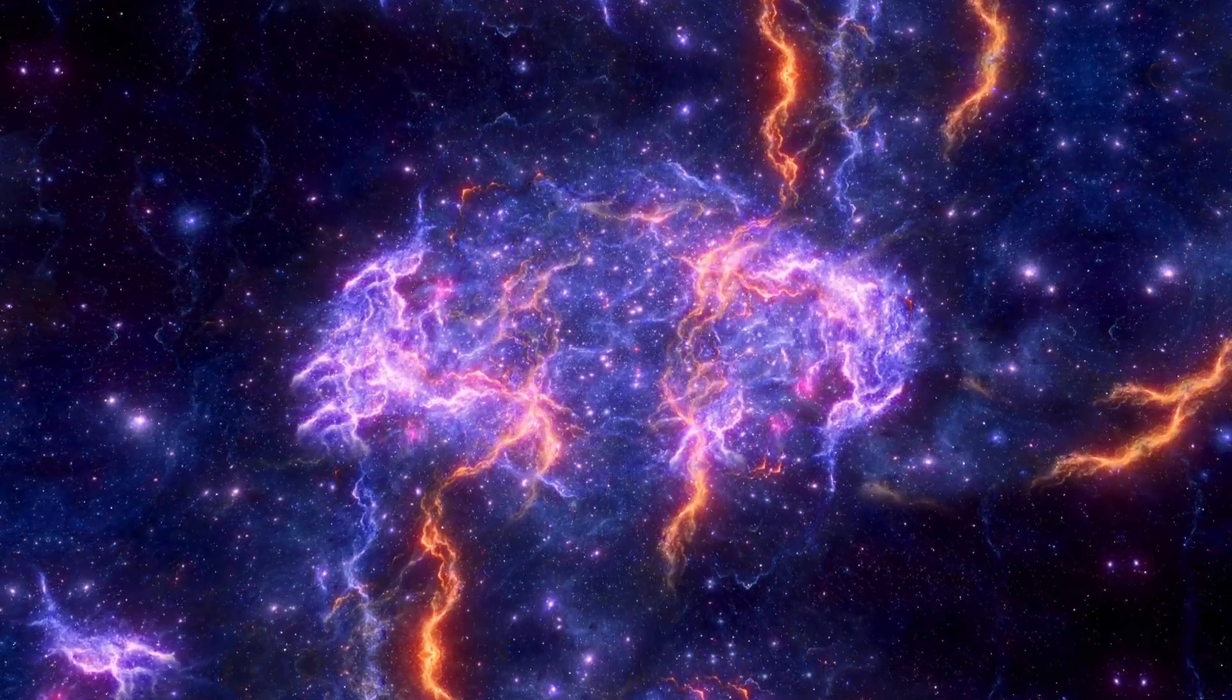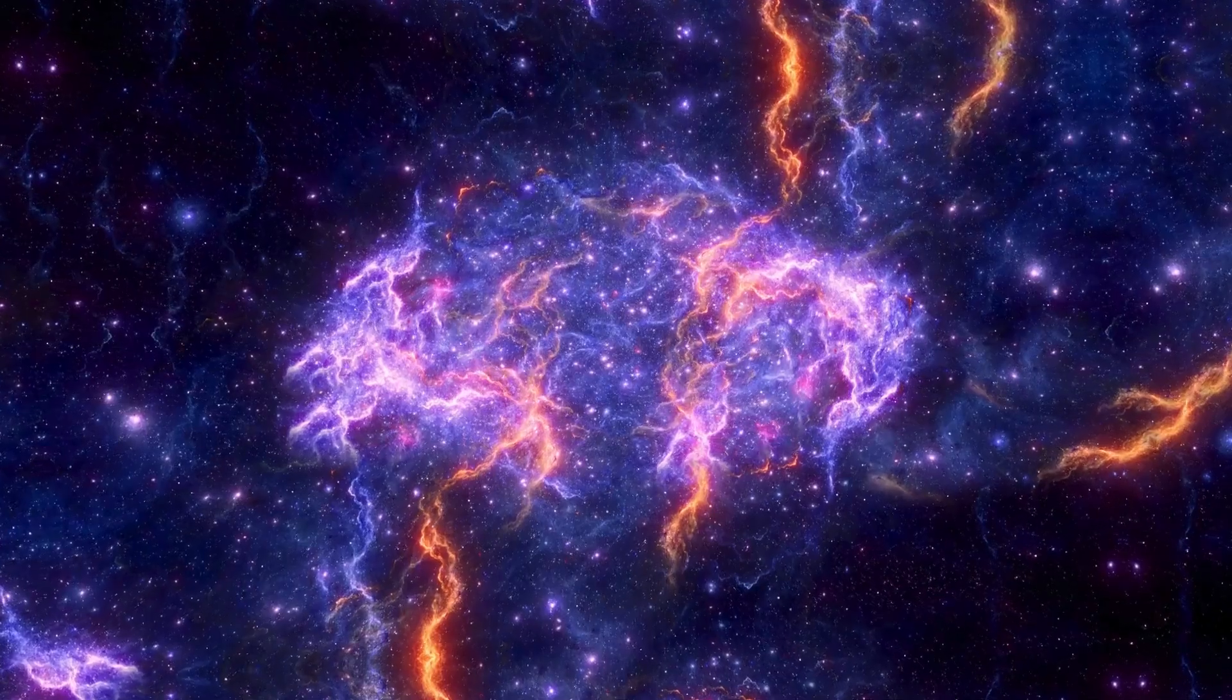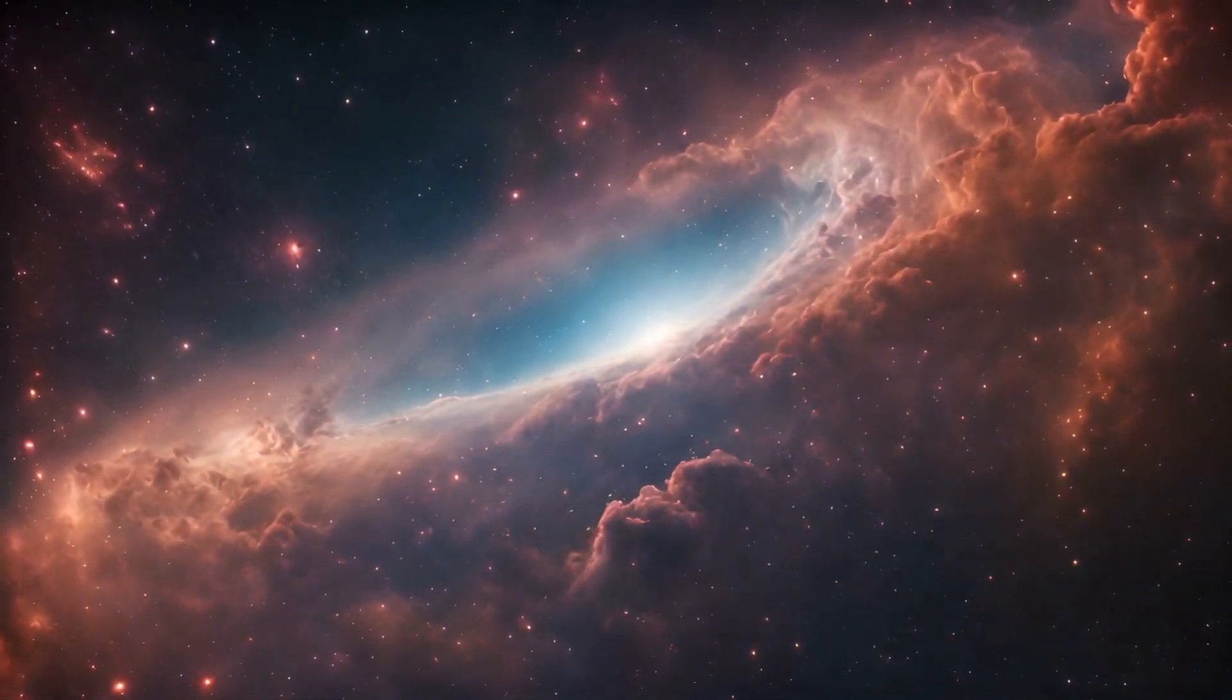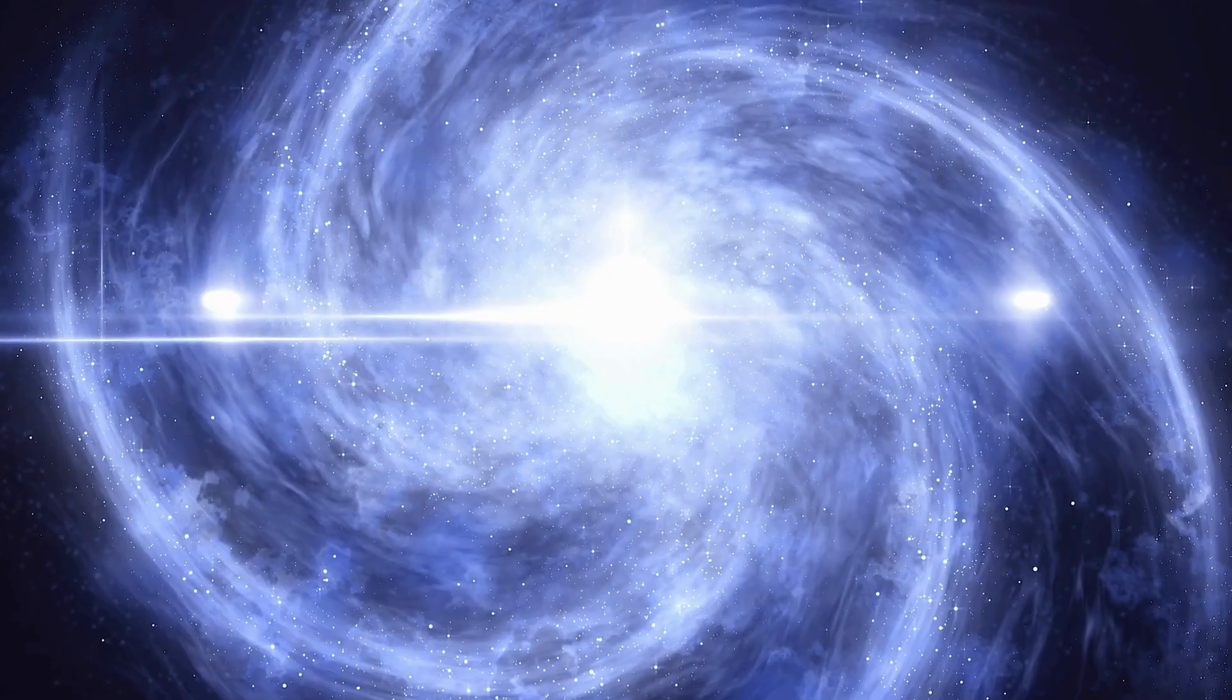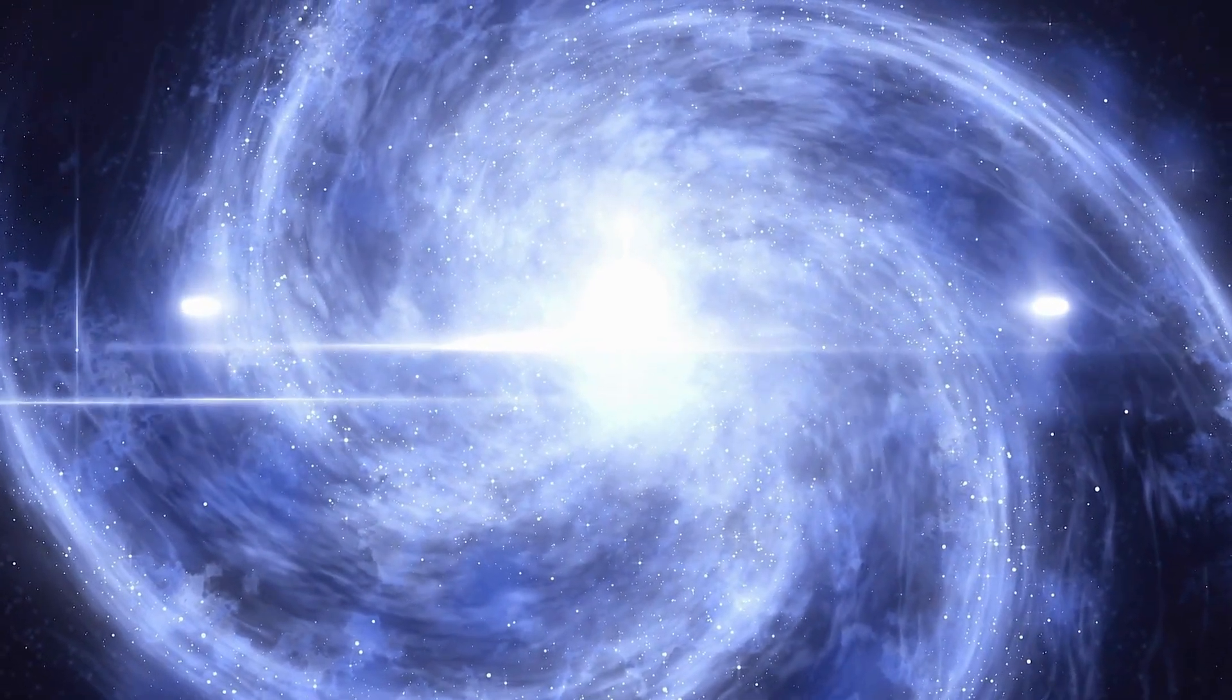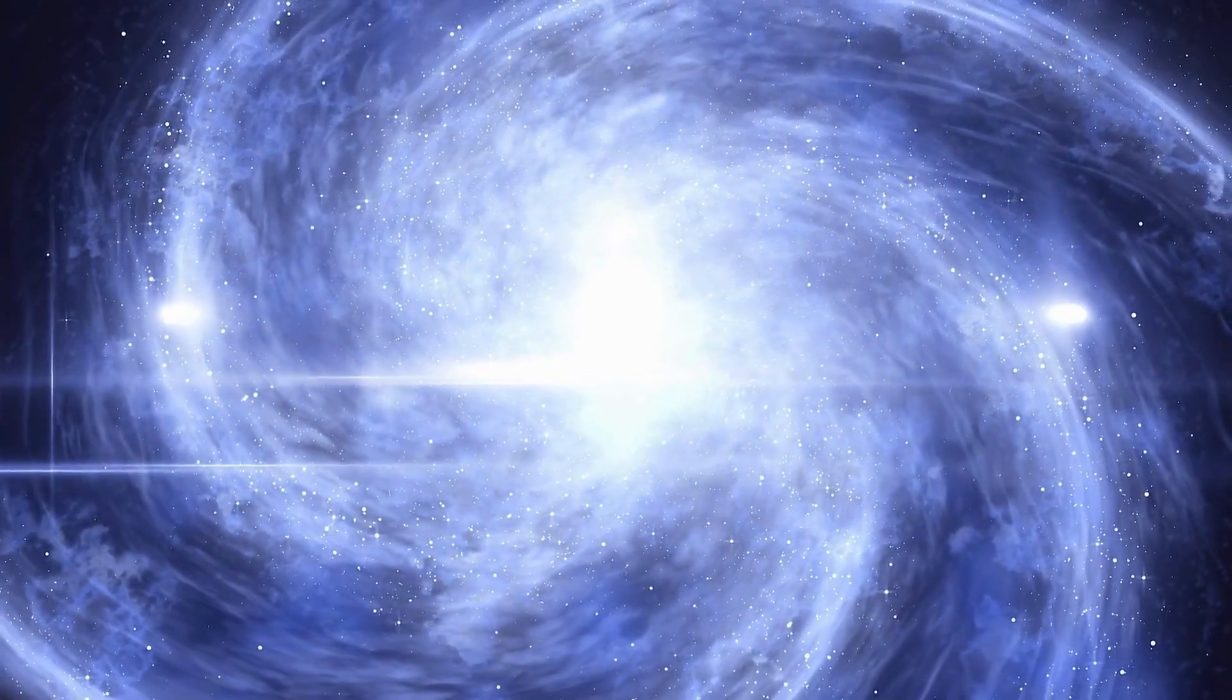But what drives a massive star like Betelgeuse to its demise? Born from the gravitational collapse of gas within molecular clouds, stars like Betelgeuse kickstart their journey by burning hydrogen in their cores. This initial phase, known as the main sequence stage, lasts for millions of years and forms the backbone of a star's life. But as stars run low on hydrogen, they evolve, embracing new energy sources.